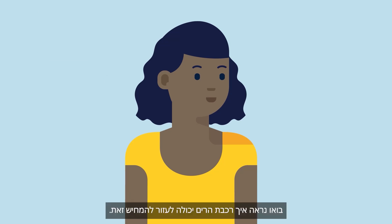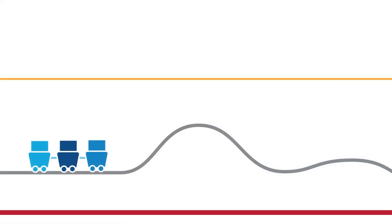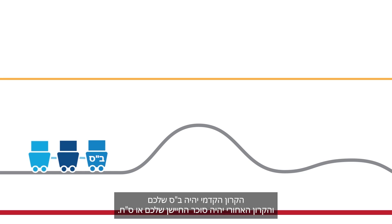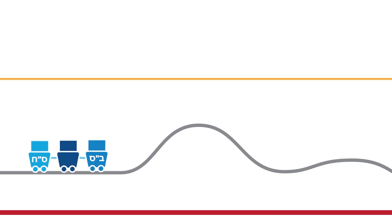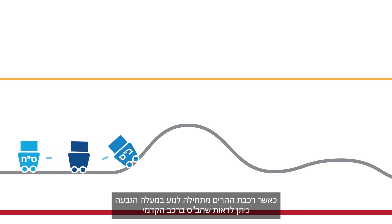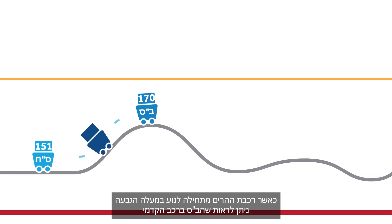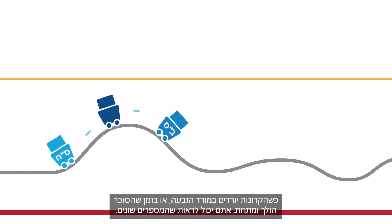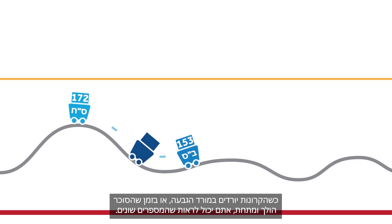Let's see how a roller coaster can help illustrate this. Picture your blood glucose and sensor glucose as cars on a roller coaster — the front car will be your BG and the back car will be your sensor glucose, or SG. As the roller coaster starts up the hill, you can see that the BG in the front car is leading the SG in the back car, and the numbers are different. As the cars head down the hill, or as glucose is trending down, you can see the numbers are still different.